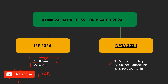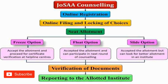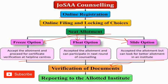For state counselling, college counselling, and direct counselling, you can use both your NATA plus JEE score. Discussing about JOSAA counselling: you will have to register online through their website, then fill the choices of institutes, and then you will have seat allotment. You then have three options — freeze that option, float it to the next round, or use the slide option for better allotment. Once you have decided, verify your documents and that will be the end of the procedure. This process mostly starts around round four, and round five will be in July — be ready for that.